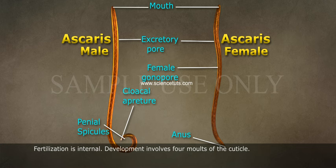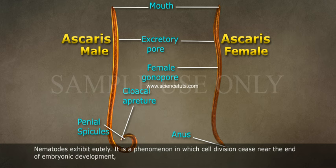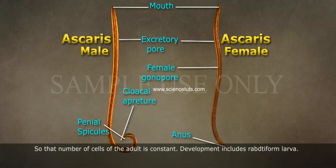Development involves four molts of the cuticle. Nematodes exhibit eutely, a phenomenon in which cell division ceases near the end of embryonic development so that the number of cells in the adult is constant. Development includes rhabditiform larvae.